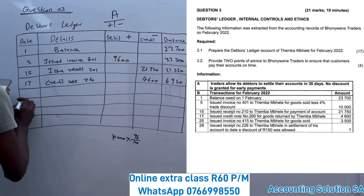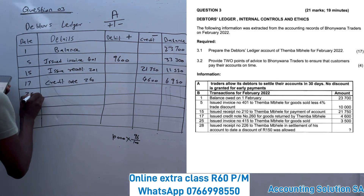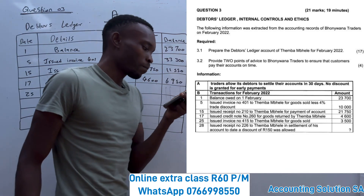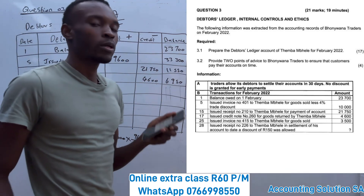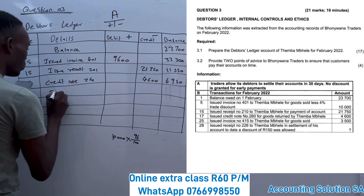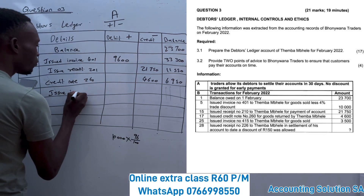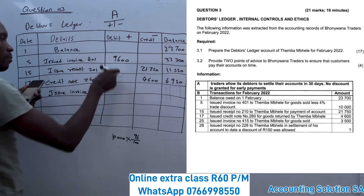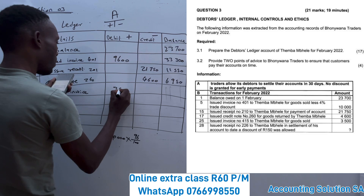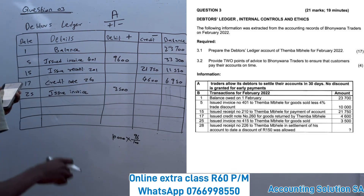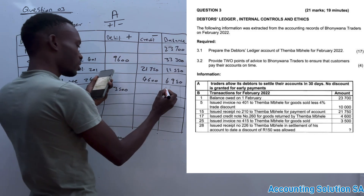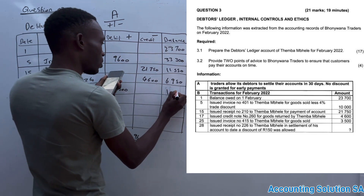Moving to the 25th, invoice number 415 is issued to Tembambele for goods sold. He purchased again, so if he purchases, the liability is going to increase by R3,500. Adding: R6,950 plus R3,500 gives us a new balance of R10,450.